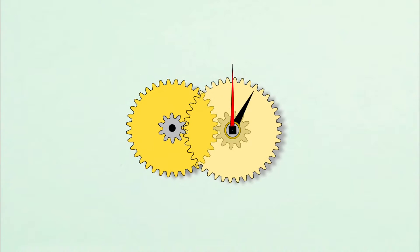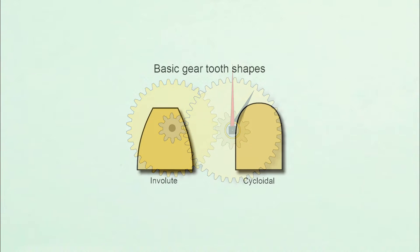The motion works is the only place in a typical clock where we are reducing the rotational speed. Since we are reducing speed, involute tooth profiles are often used on the wheels and pinions in the motion works.